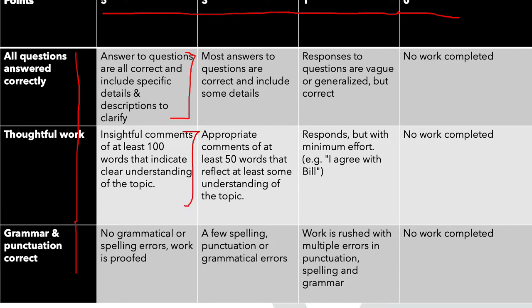A student can look at this and see that if they want to get a perfect score, they need to answer questions correctly, include specific details and descriptions, make their posts at least 100 words and clearly demonstrate understanding of the topic, and have no grammatical or spelling errors — in other words, their work is proofread.